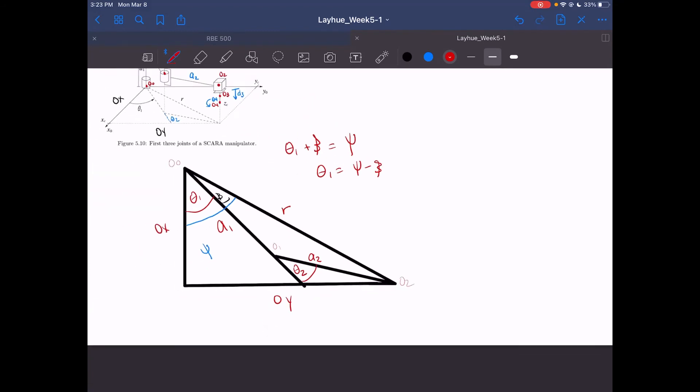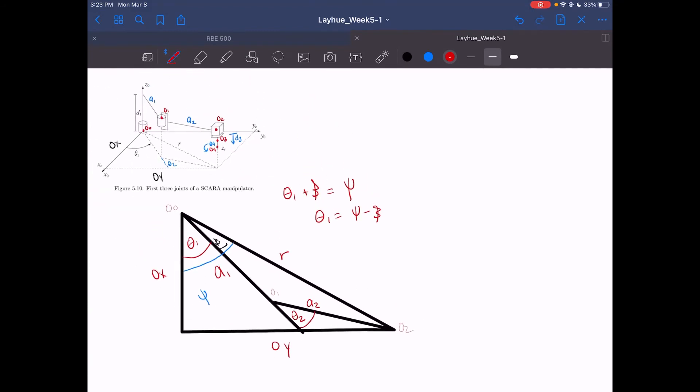So to do that, we'll start with psi. Psi is actually fairly easy to calculate since this is a right triangle. We can calculate just simple tangent with OX and OY. So then our psi is just equal to atan2 of OY over OX.